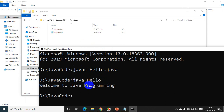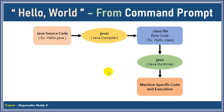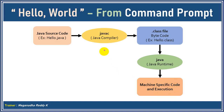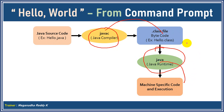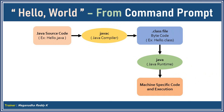We learned two ways of adding the Java compiler and runtime path: temporarily using the set path command, and permanently using environment variables. To summarize: you write Java source code in a .java file, compile it with javac to produce a .class bytecode file, then run it with the java runtime to produce machine-specific execution. Java compiler converts to bytecode; Java runtime converts to machine-specific code. Thanks for watching — practice as you follow along and see you in the next module.